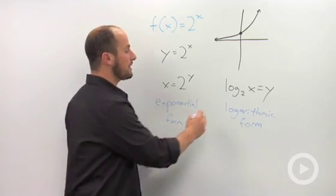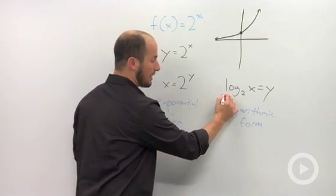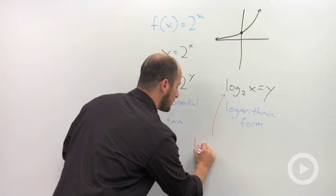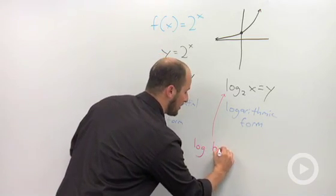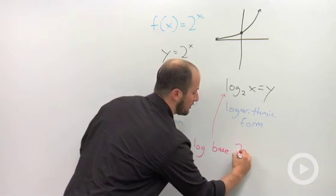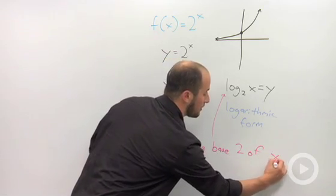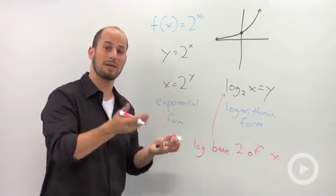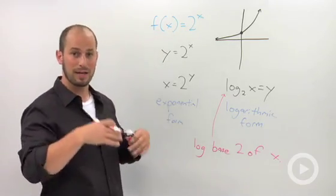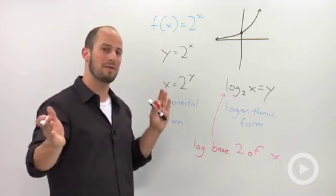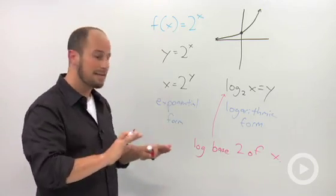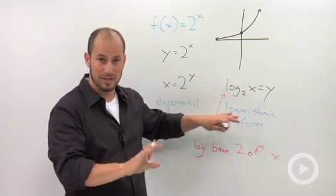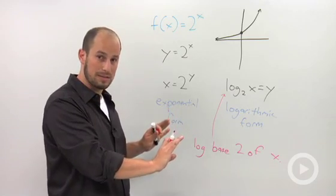A little bit of lingo to go along with this, just so you know how to talk about this form. This is log base 2 of x. Obviously the 2 in this case is a completely random number — it could be a 3, a 7, a 124. Basically, you say log base number of whatever your inside function is in order to talk about these.